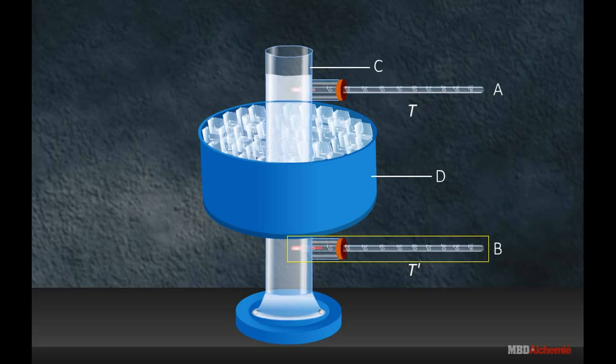But the temperature reading T' of the thermometer B falls till it reaches 4 degrees Celsius and remains steady at this temperature.